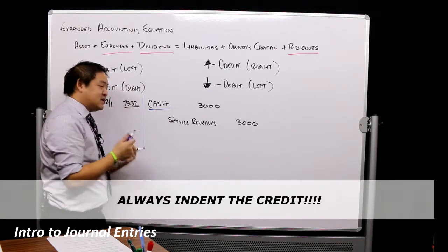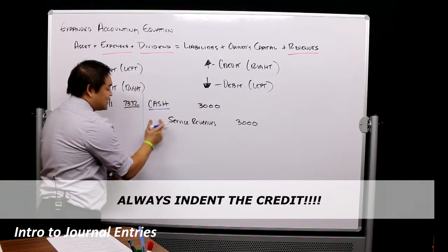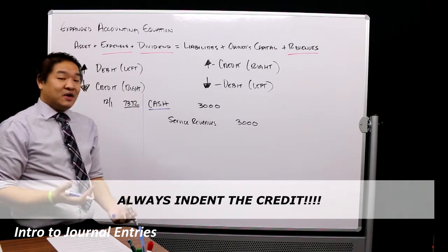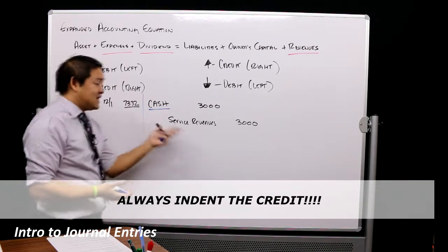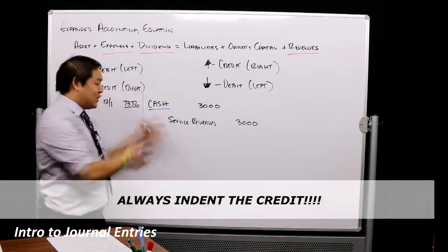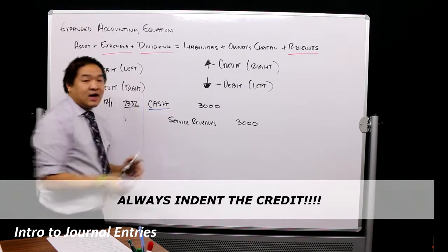A lot of students, and this happens all the time, they'll move this service revenue, so cash, and they'll do service revenue here, and then it'll look like two debits, and they'll go, why did I get it wrong? Well, you got it wrong because you didn't indent it. So picture tells you a thousand words. Well, here's the picture. It should look exactly like this.